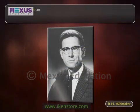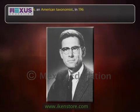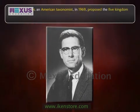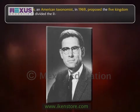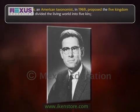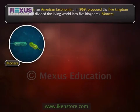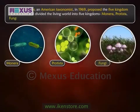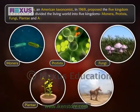Subsequently, R.H. Whittaker, an American taxonomist in 1969, proposed the five kingdom classification and divided the living world into five kingdoms: Monera, Protista, Fungi, Plantae, and Animalia.